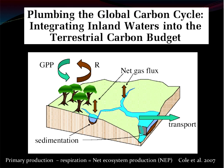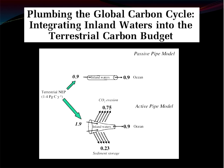Lastly, we'll ask whether inland waters could serve as sites for collecting organic matter during sedimentation processes. This diagram from the Cole et al. paper 'Plumbing the Carbon Cycle' relies on two models. The first is the passive pipe model. The output term next to the word 'ocean' is 0.9 petagrams — think of that as roughly one petagram. If inland waters have no active role in transforming carbon as it moves from the continents to the world's oceans, then 0.9 petagrams of carbon also enter these systems.